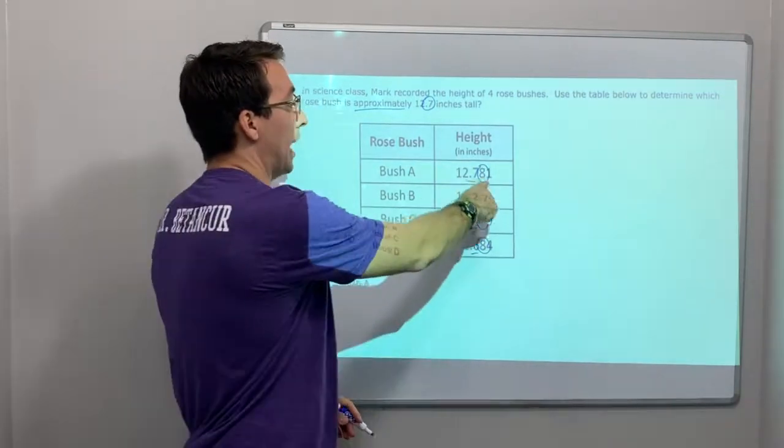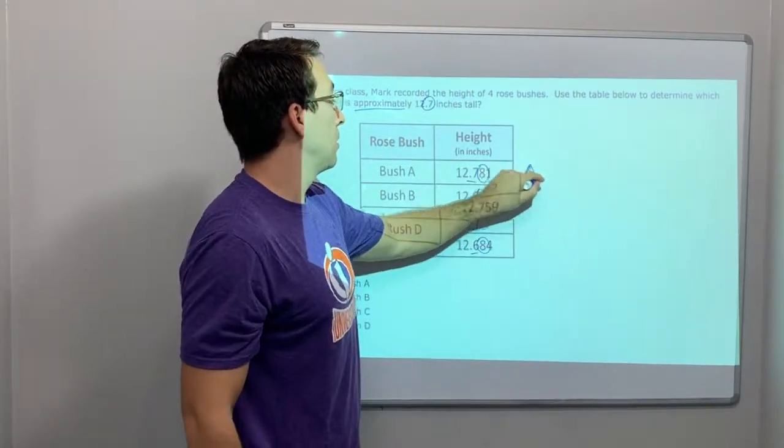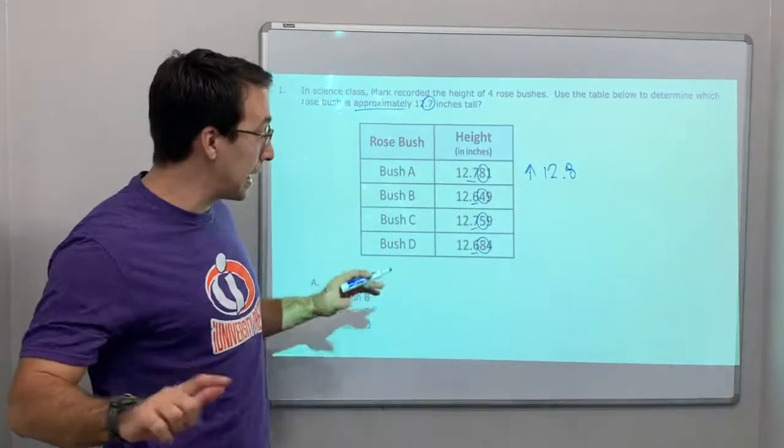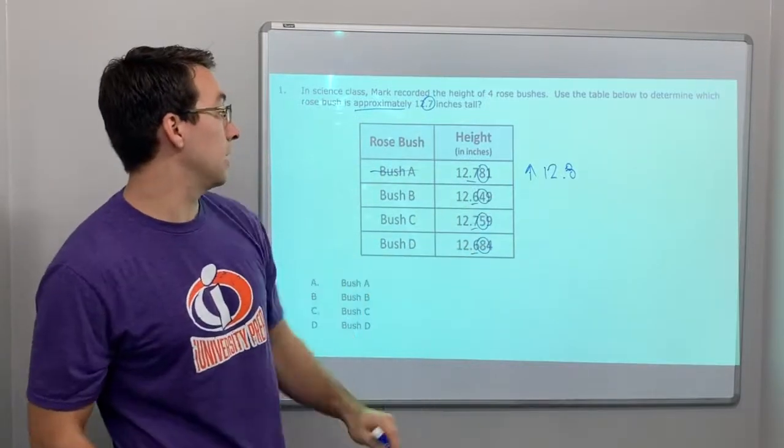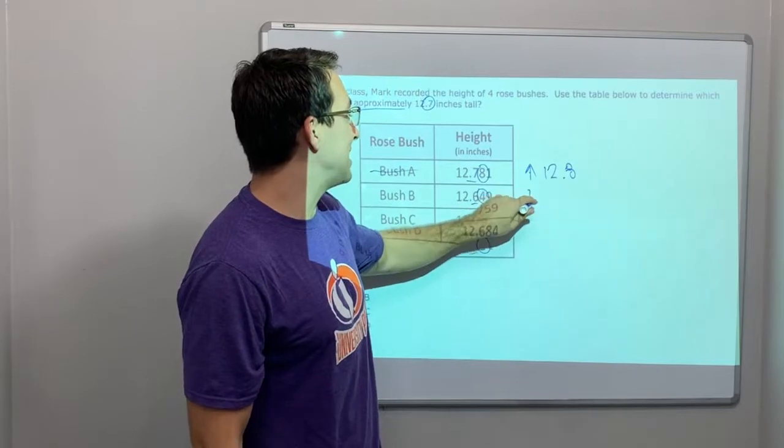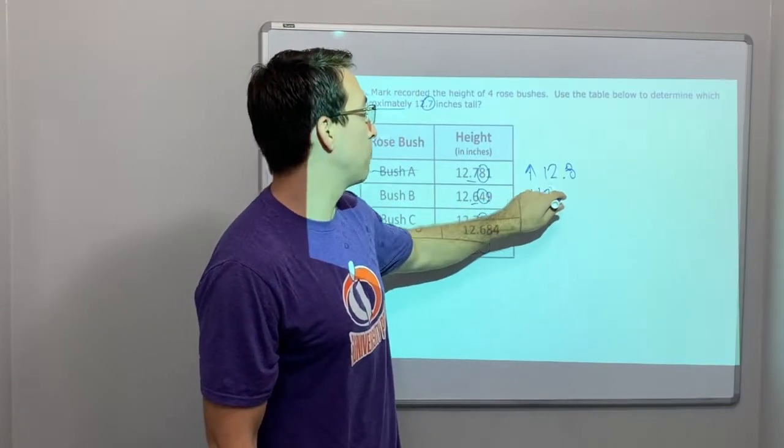Oh, look. 8 goes up. So, that's going to be 12.8. Not it. That's not rose bush A. 12.649. So, 4 is down. It stays the same. So, that's going to be 12.6.